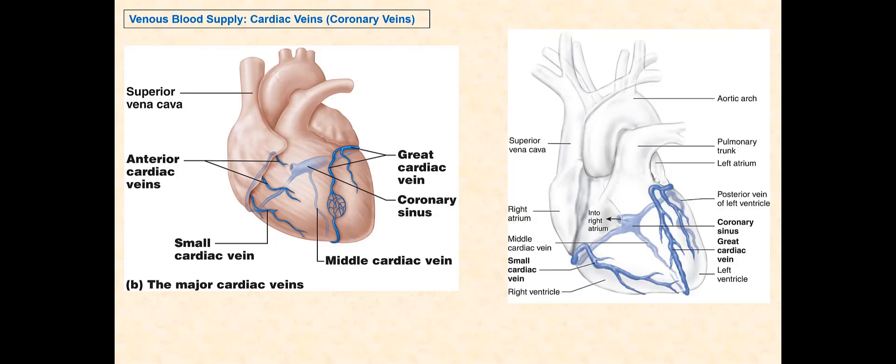Furthermore, when the ventricles contract, the coronary blood vessels — the coronary arteries and the coronary or cardiac veins — are compressed or squeezed due to the high pressure generated by the contraction, so no blood can flow through them. Only when the ventricles relax are these coronary blood vessels no longer compressed or squeezed, and blood can flow through them.